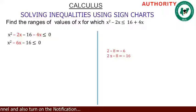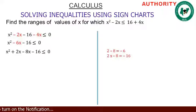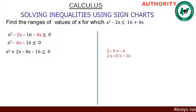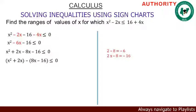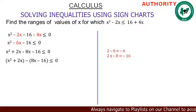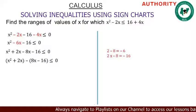So we end up having x squared plus 2x minus 8x minus 16, less than or equal to zero. From here, let's group them two by two.